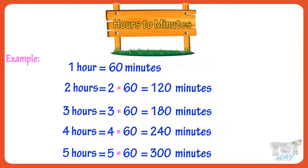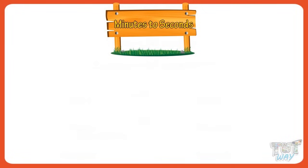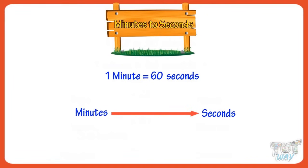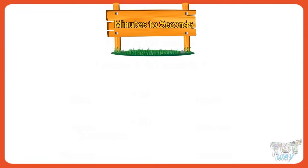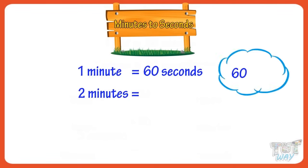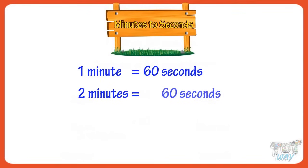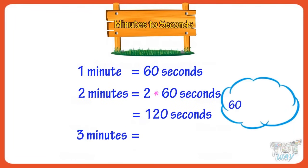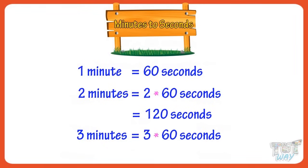Now let's learn converting minutes to seconds. There are 60 seconds in a minute. So to convert minutes to seconds, we need to multiply minutes with 60. One minute equals 60 seconds. Two minutes equals 60 plus 60, or 60 multiplied by 2, equals 120 seconds. Three minutes equals 60 plus 60 plus 60, or 60 multiplied by 3, equals 180 seconds.